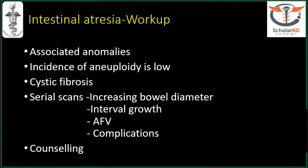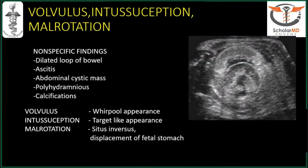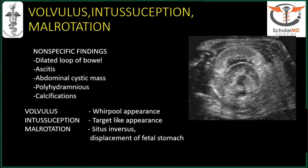Intestinal atresia workup: look for associated anomalies; incidence of aneuploidy is low so karyotyping is not critically important. It can have an association with cystic fibrosis, more prevalent in the Western world. Serial scans are necessary to monitor whether bowel diameter is increasing, interval growth, amniotic fluid volume, and to pick up complications. Serial scans and counseling are very important. Regarding volvulus and mid-gut volvulus — there is a classical whirlpool appearance seen on color Doppler. This is more common when there is malrotation, and especially in cases of situs inversus where malrotation is common.